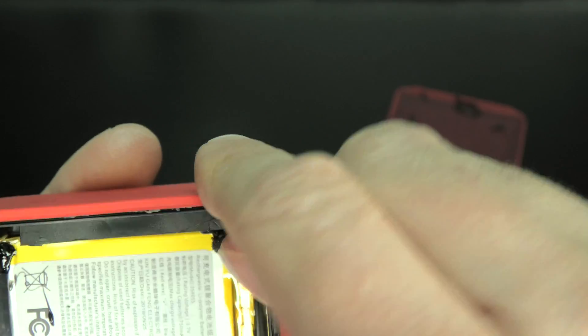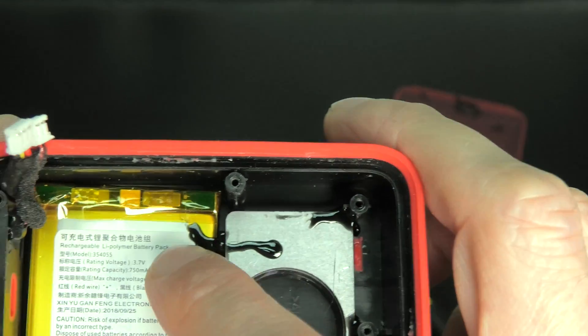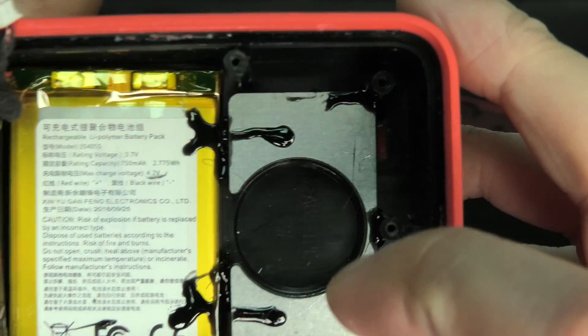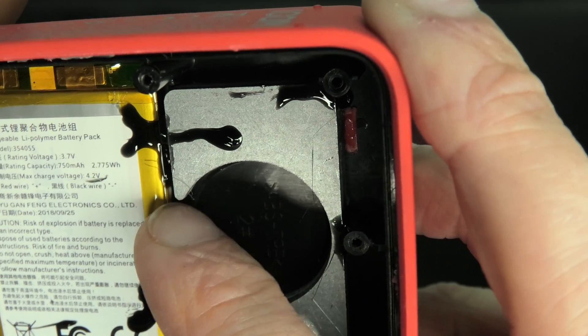And then here we have the second connector with the three leads that goes here to the battery with the charge controller on top here. And then let's have a look here, 3.7 volts 750 milliamps.